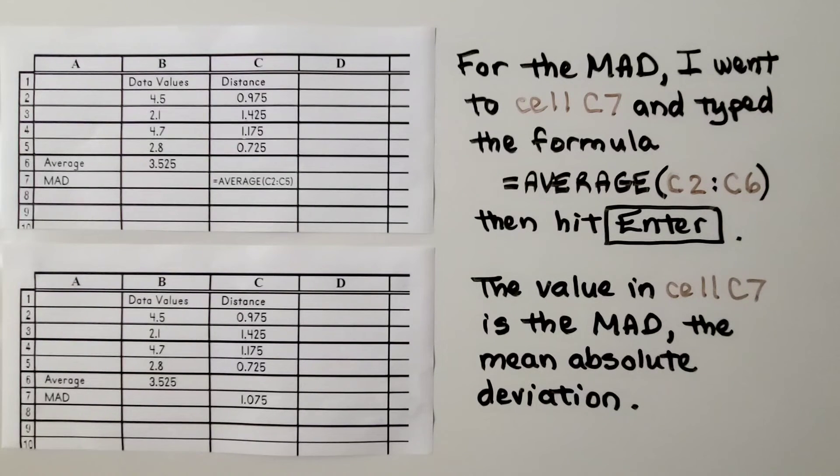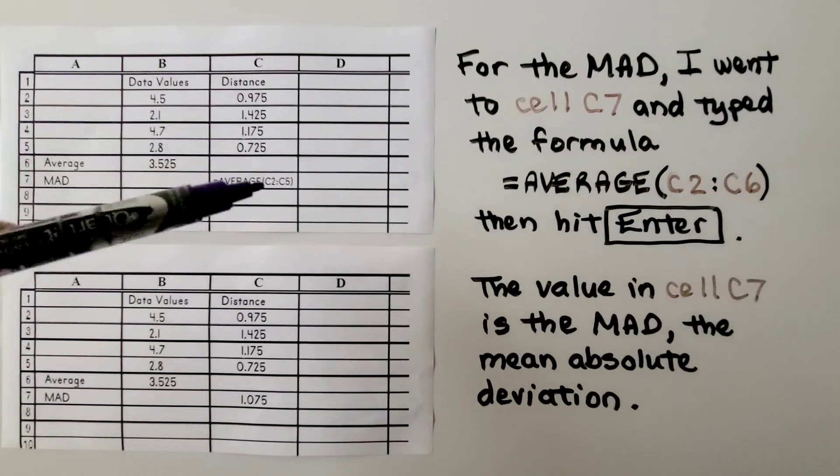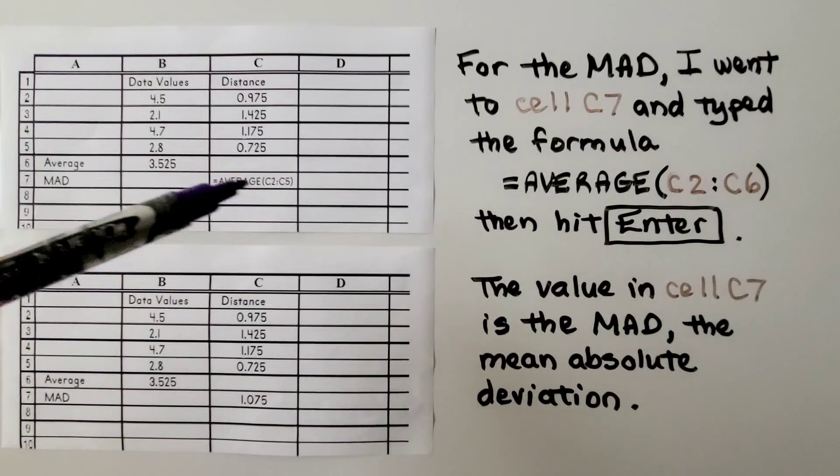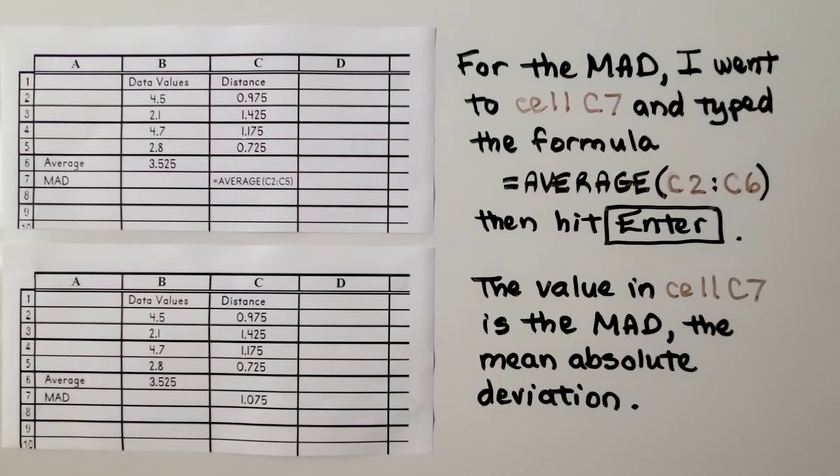Now this was a very basic explanation of finding an average and a mean absolute deviation in Excel. Once you understand Excel and you get good at it, you'll find the shortcuts of highlighting all these boxes to find it and stuff like that. But this was just a real basic intro to Excel and finding the mean absolute deviation.